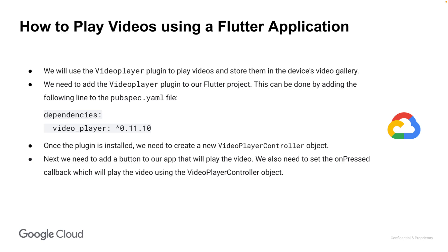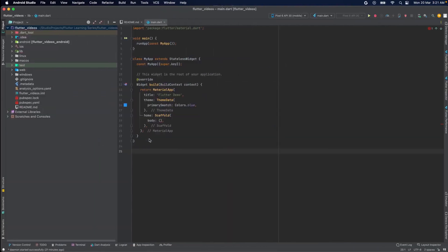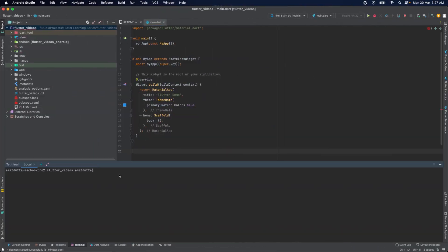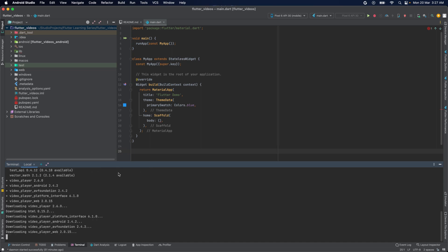Finally, we need to add the video to our app. Let's move to Android Studio and see how the video object will load the video from the YouTube URL. Let's run the 'flutter pub add video_player' command to install the video player plugin.